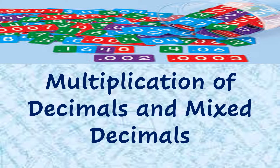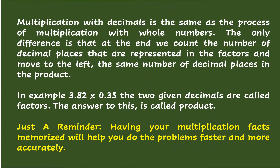Multiplication of decimals and mixed decimals. Multiplication with decimals is the same as the process of multiplication with whole numbers. The only difference is that at the end, we count the number of decimal places represented in the factors and move to the left the same number of decimal places in the product.